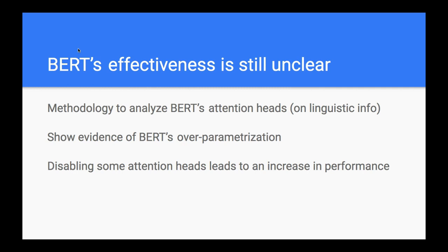The paper's contributions are: it provides a methodology to analyze BERT's attention heads and discover what kind of linguistic information is encoded in BERT's attention layers. It also shows evidence of BERT's over-parameterization — basically saying a lot of attention heads are not really helpful, and we can just remove them without performance dropping. Lastly, it disables some attention heads and they end up leading to an increase in performance. It's a very comprehensive experiment and methodology, a very enjoyable paper. It was published last year and already has 39 citations.